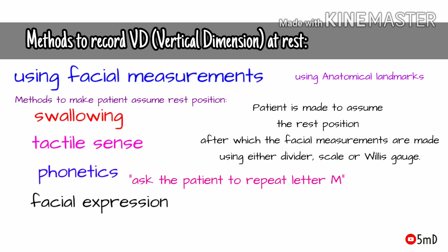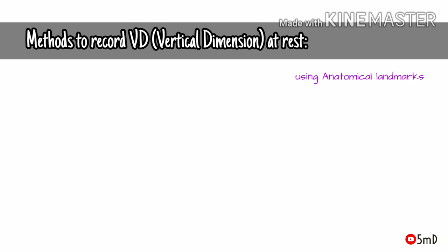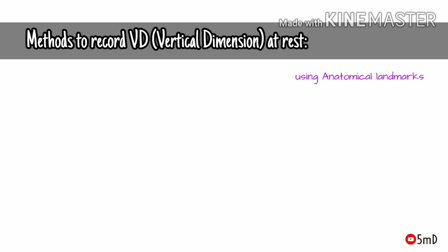The second method is by measurement of anatomical landmarks using the Willis guide, which states that when the mandible is in physiological rest position, the distance between the pupil of the eye to the corner of the mouth is equal to the distance from the anterior nasal spine to the lower border of the mandible. With the help of this Willis guide, the rest position is determined and the vertical dimension at rest is recorded.